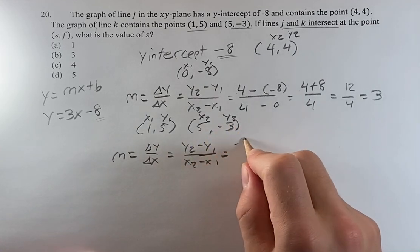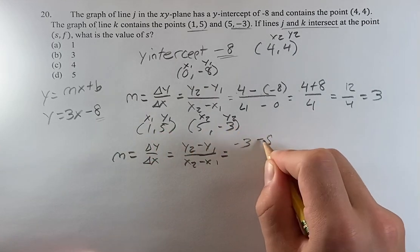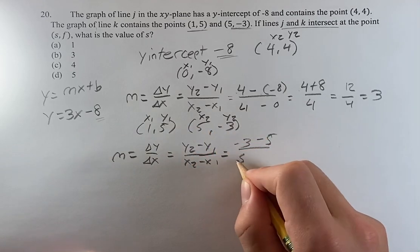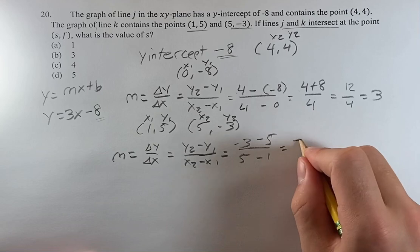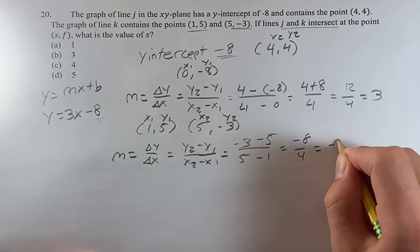Plugging in, we get negative 3 minus 5 over 5 minus 1. That is going to give you negative 8 over 4 is equal to negative 2.